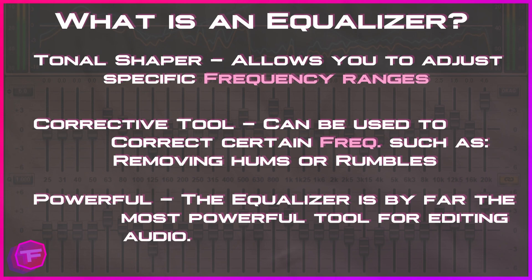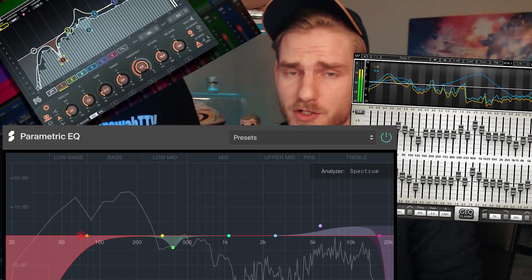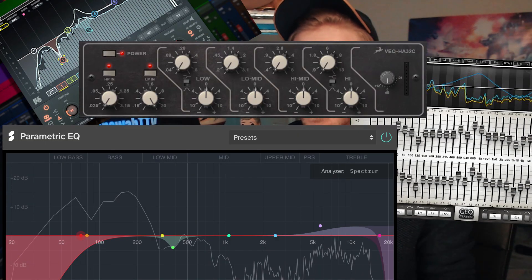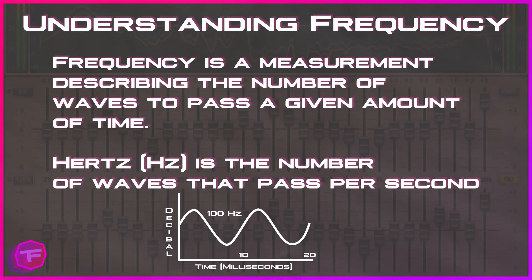The equalizer is a very powerful tool — by far the most powerful tool for editing audio. When first getting into EQ it can be a little overwhelming because there are so many different types: you have dual band, dynamic, graphic EQs, parametric, semi-parametric EQs. Each and every EQ edits the frequency of a specific audio signal.